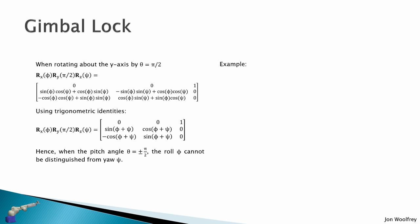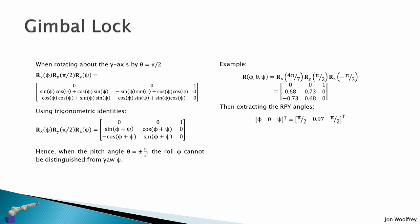As an example: a rotation defined by phi=4π/7 about X, theta=π/2 about Y, and psi=-π/3 about Z produces a certain rotation matrix. When we extract the roll-pitch-yaw angles from that matrix, we get phi=π/2, theta=0.97, and psi=π/2 — which is not the same as the original angles. This demonstrates the gimbal lock problem: even with the original definition, we cannot recover the original orientation.